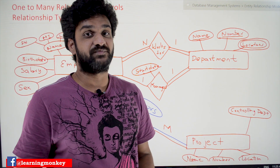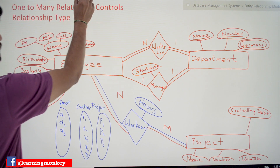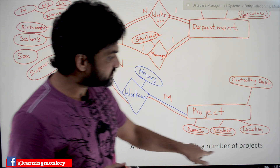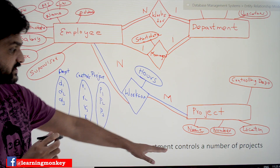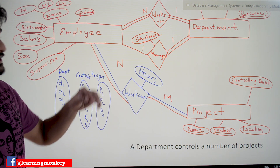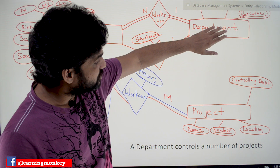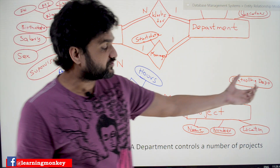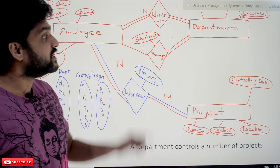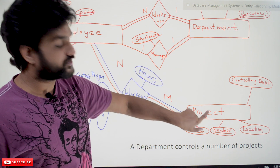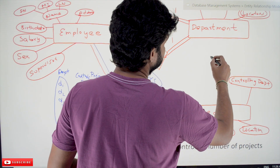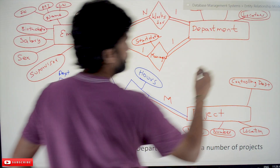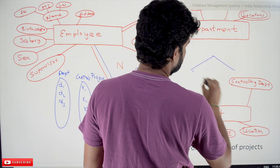In the requirements, if you closely observe, it is given that a department controls a number of projects. Departments are controlling a number of projects, so the new relationship type we can obtain is 'controls' — department controls projects.